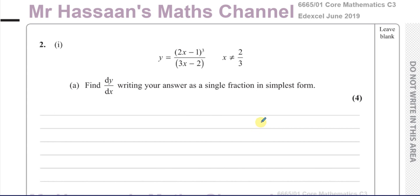That's a common mistake people make when they first start differentiating something like this — thinking you can differentiate the numerator and denominator separately. We have something called the quotient rule, which is based upon the product rule. The quotient rule is actually quoted in the formula book, although I like to set it up in a particular way that makes life a lot easier.